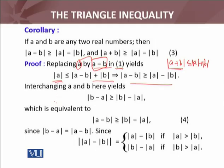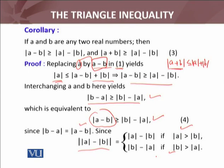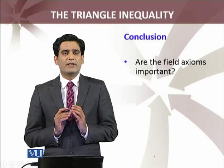Similarly, if we interchange a and b here, it yields |b - a|, which is equivalent to |a - b|. Now whether it's b minus a or a minus b, these are the same things. Since b minus a equals a minus b, and also we have this: |a| - |b| equals a piecewise defined function, just as we showed in the last slide. So triangle inequality is very important in mathematics.